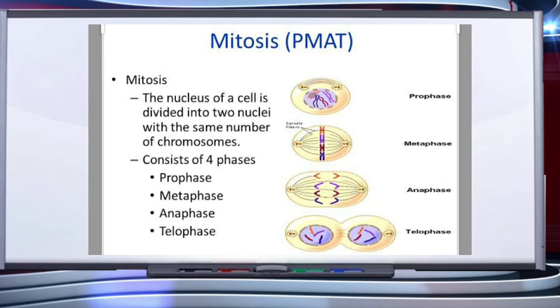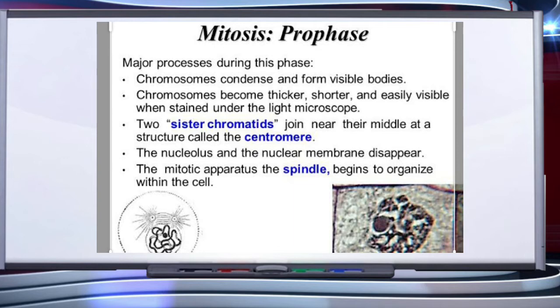Prophase is the first stage of mitosis and follows the S and G2 phases of interphase. In the S and G2 phases, the new DNA molecules formed are not distinct but intertwined. In prophase, chromosomes condense and form visible bodies — they become thicker, shorter, and easily visible when stained under the light microscope. Each chromosome is made up of two sister chromatids joined near the middle at a structure called the centromere. The nucleus and nuclear membrane disappear.